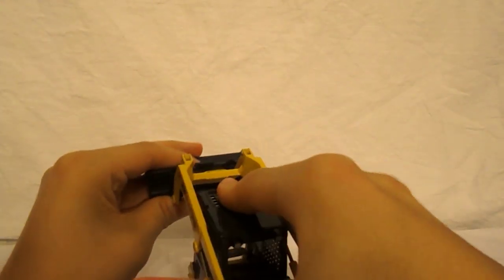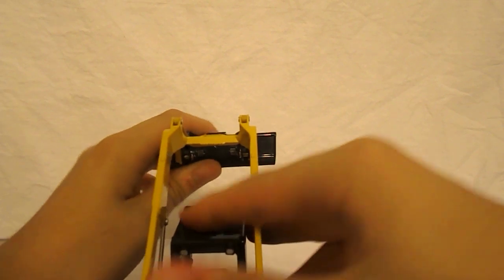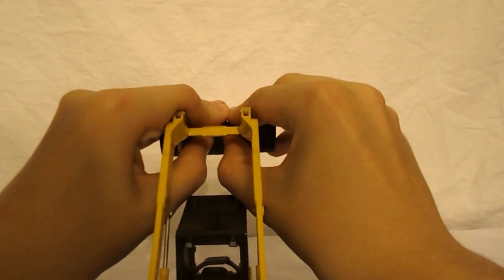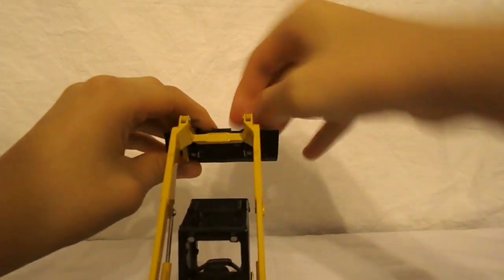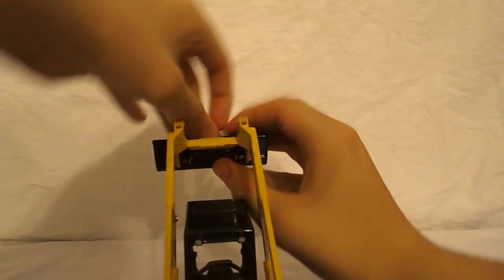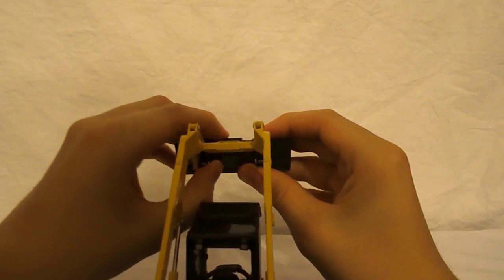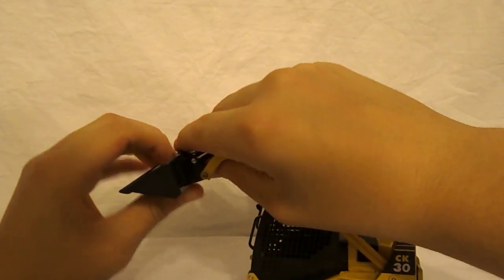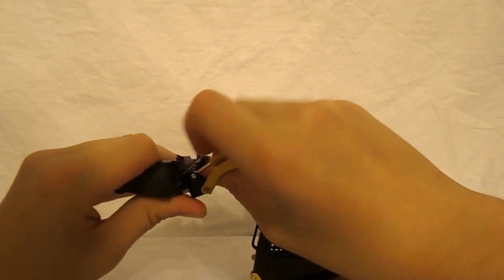One thing that is really nice about this model is that it has a working quick coupler. I'll show you how to use it. I'm going to get the bucket off first. It is kind of difficult sometimes. But you know, this is a really good quick coupler system.